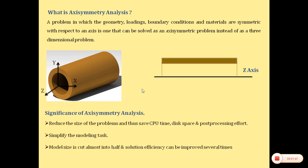Now what are the significance of Axis Symmetry Analysis? First significance is it reduces the size of the problem and thus saves CPU time, disk space and post-processing effort. If we solve only for this particular section using a 2D element, it will definitely save problem-solving time. It simplifies the modeling task — model size is cut almost into half and solution efficiency can be improved several times. So this is a very important significance of Axis Symmetry Problems.